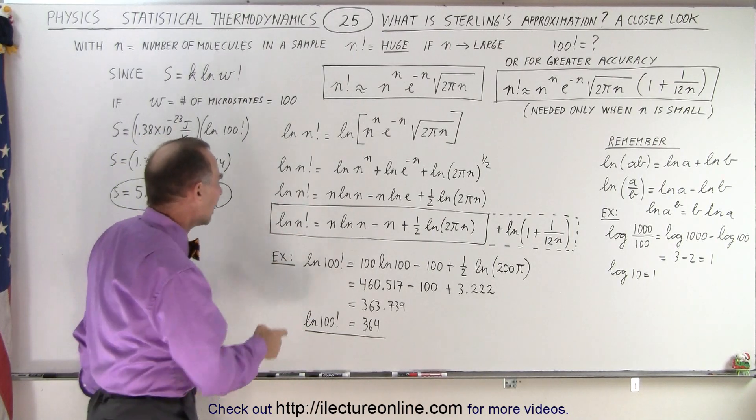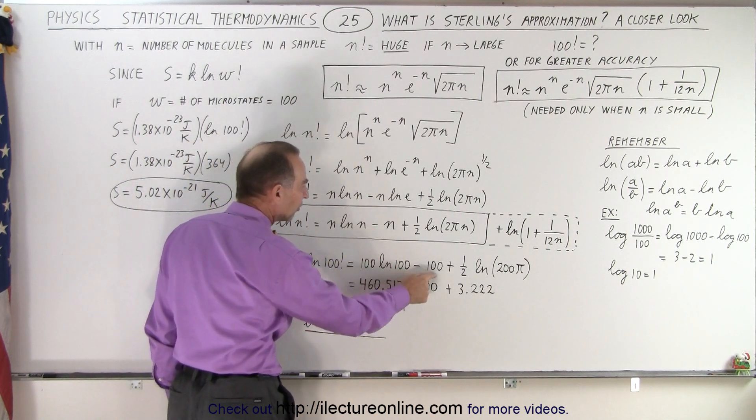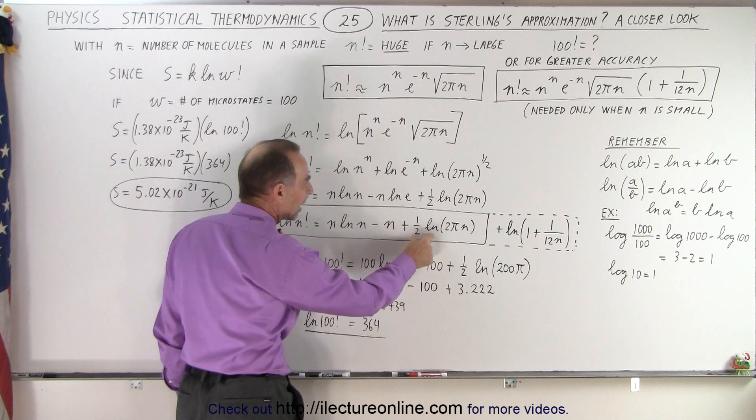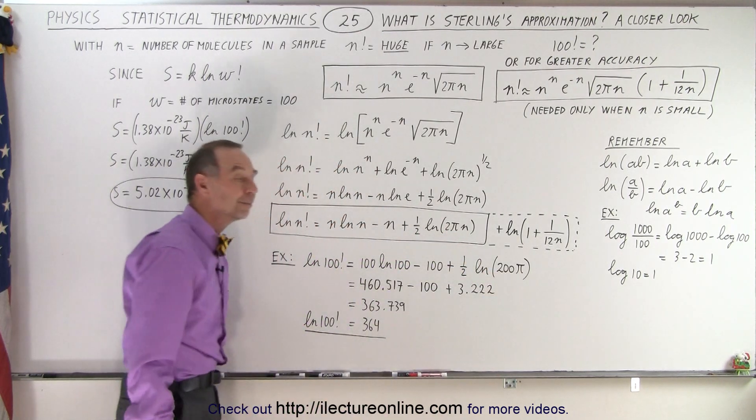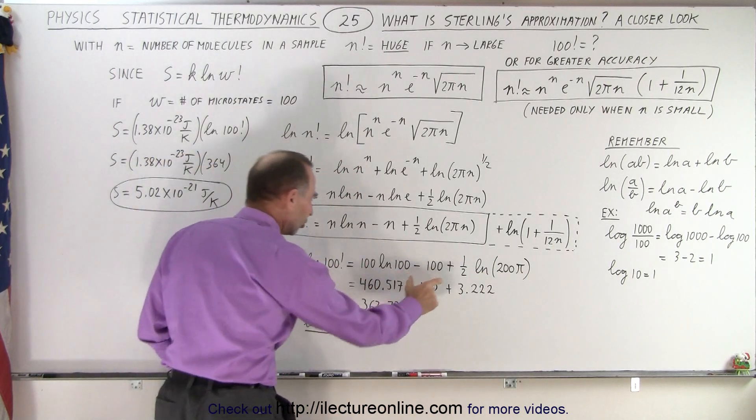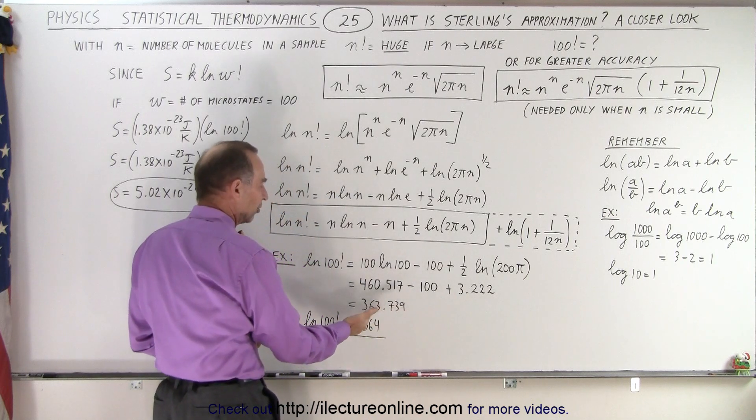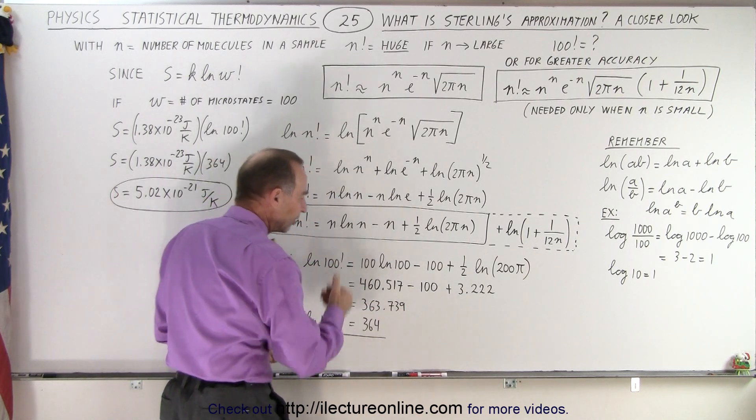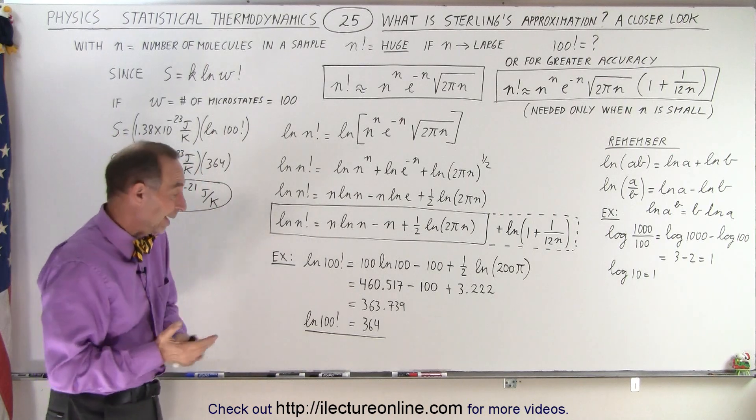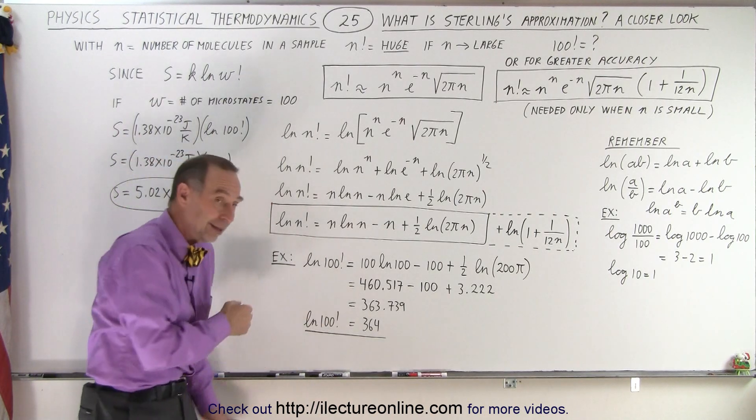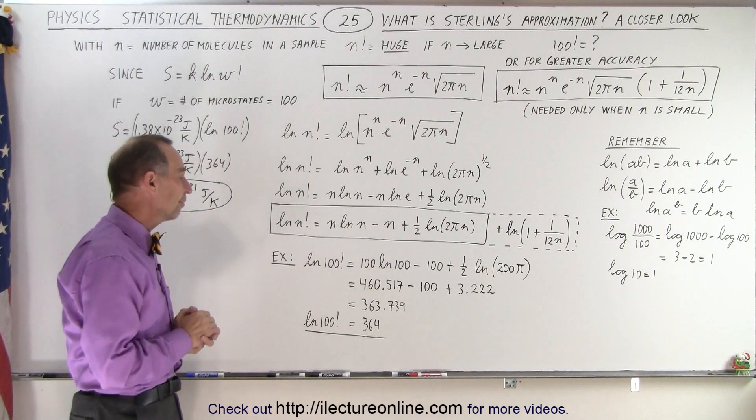So as an example, the natural log of 100 factorial is 100 times the natural log of 100 minus 100 plus half times the natural log of 2 times 100 times pi, which is 200 pi. Grab your calculator, you calculate these three terms, 460 minus 100 plus 3 essentially, so you see that this is almost 364. The natural log of 100 factorial is equal to 364, and if you try to calculate this separately, take 100 factorial, you can't do it with your calculator, you wouldn't be able to figure this out.